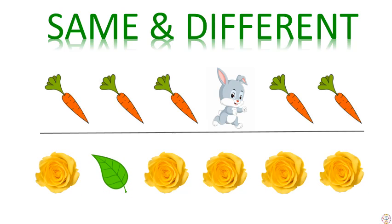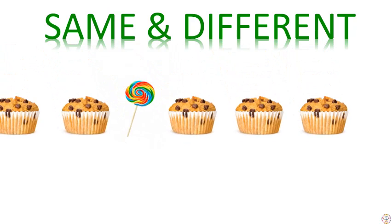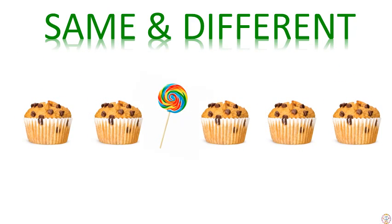Can you find which one is different here? In the second set of objects, the flowers are same and the leaf is different. Let's have a guessing game. In the given set of objects, you have to find which ones are same and which one is different. So here the cupcakes are same and the lollipop is different.